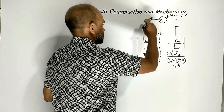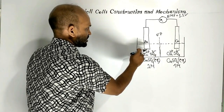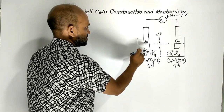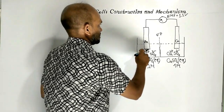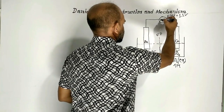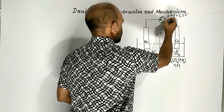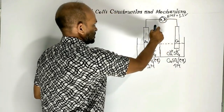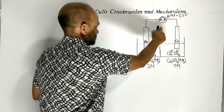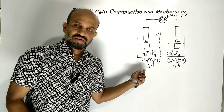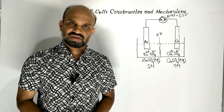Now the circuit is completed. After the completion of the circuit, this cell produces electricity, and the pointer moves to show the production of electricity. Now let us see the mechanism of the cell — how it produces electricity.